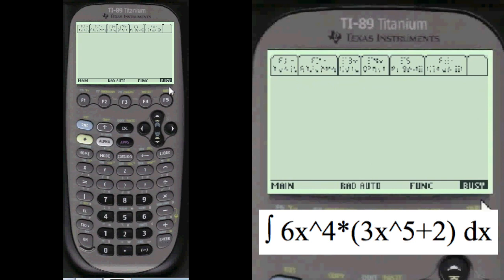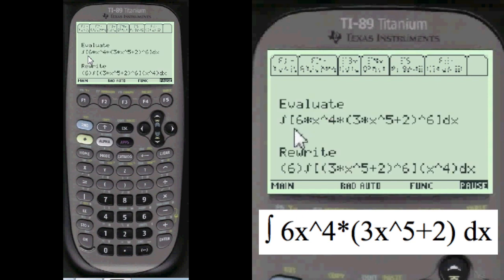And we're going to work the problem. Busy means the program is loading. We're going to evaluate this. First we rewrite it. Remember all constants come out of the integral. And then we put the x to the 4.